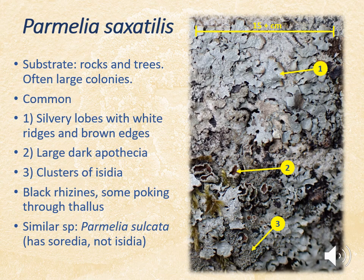A really good beginner species is Parmelia saxatilis, because it's very common on rock and wood and has a lot of different features. You can see it has brown edges to the lobes with white reticulations, a lot of large dark brown apothecia, and this foamy-looking material which on close inspection are isidia. A lot of the enlarged photographs of isidia throughout the talk have actually come from this specimen. Sometimes you'll also see little tiny black things poking up through the thallus — those are the rhizines pushing up through the surface.